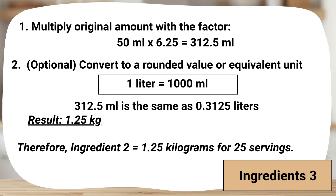Ingredient 3 — Step 1: Multiply by the conversion factor: 50 milliliters × 6.25 = 312.5 milliliters. To prepare 25 portions, the recipe now needs 312.5 milliliters of this ingredient. Step 2 is optional: convert to a rounded value or equivalent unit. If the kitchen prefers more practical measurements, 312.5 milliliters is the same as 0.3125 liters, since 1 liter equals 1,000 milliliters. However, it's common to leave it in milliliters since the metric system works easily with decimals. Final answer for ingredient 3 is 312.5 milliliters. The original recipe used 50 milliliters for 4 servings; to make 25 servings, multiply by 6.25. Easy to measure directly because the metric system doesn't require fractional conversions like pounds to ounces.